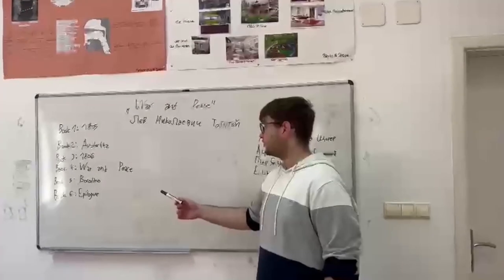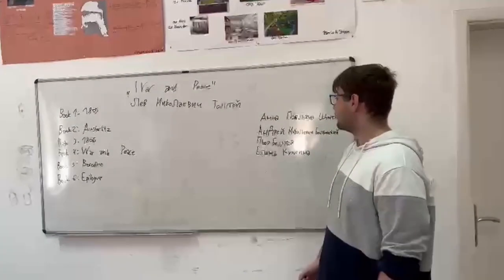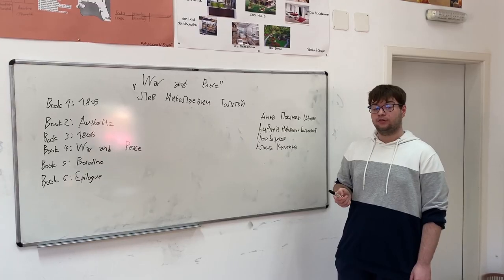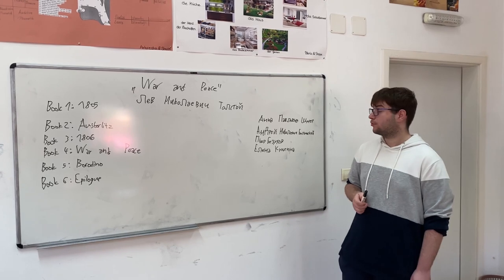We're moving to the fourth book, War and Peace. In the fourth book, it talks about the war between Napoleon's France and Imperial Russia.